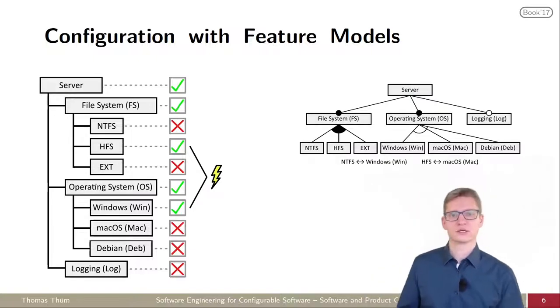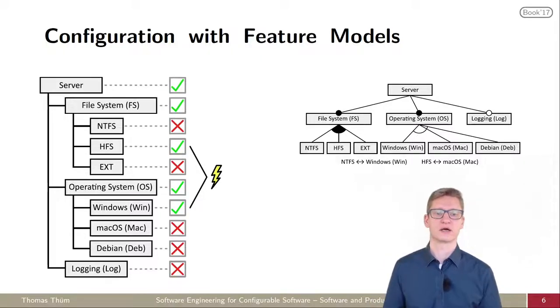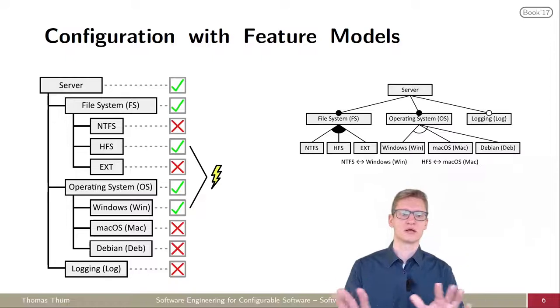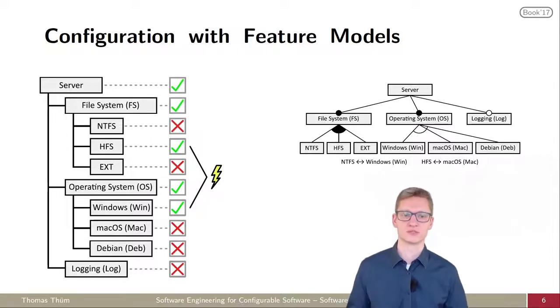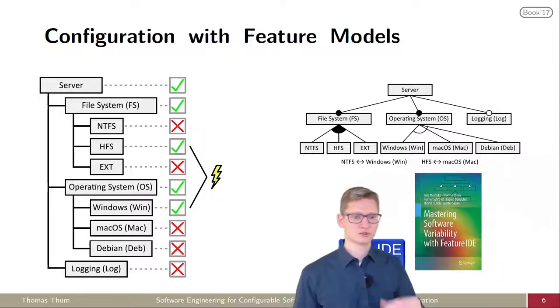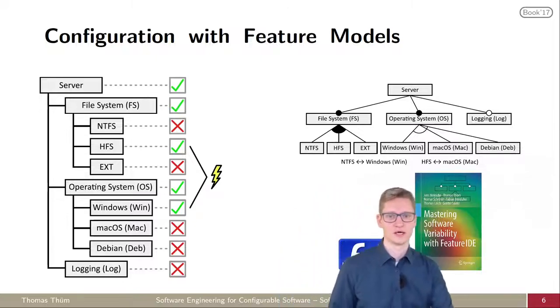For this, you need a description of the available configuration space about the dependencies. A common model for this is a feature model. A feature model describes the features in a hierarchy and their dependencies. Basically, you can understand them as a propositional formula. It's just a propositional formula explaining what are the valid combinations. That's what FeatureID is about and what the book is about: how to use feature modeling for software and product configuration and for their analysis.